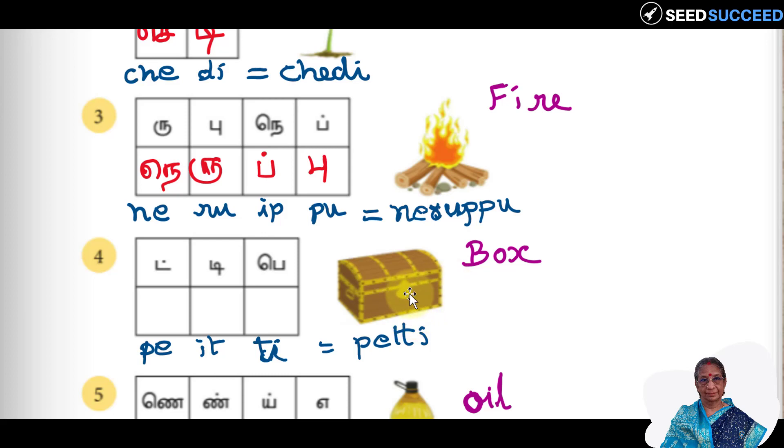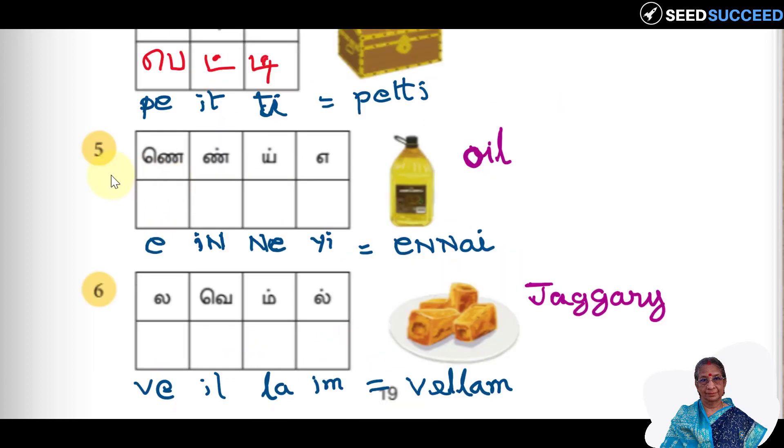The fourth one is, it is a box. In Tamil, petty. See the pronunciation, petty. Pay, tea, petty. Pay, so otrekombu, pa, this is pay. It. Then tea, petty. This is a perfect word. Pay it tea petty. Petty means box.